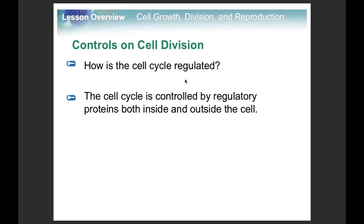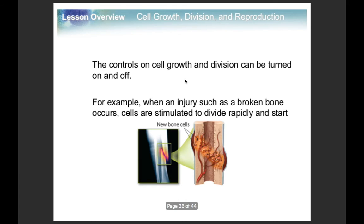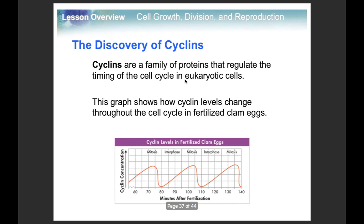Cell division can't just go crazy and divide as many times as it wants — you need to be able to control it. There are regulatory proteins that act both inside and outside the cell, and you can turn the control of cell division on and off depending on what your body needs. If you have a break or a puncture in your skin, you'll want to turn it on. Cyclins help regulate the timing of the cell cycle, especially in eukaryotic cells.